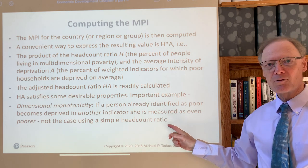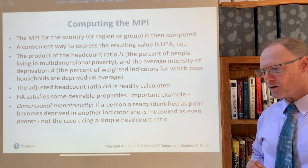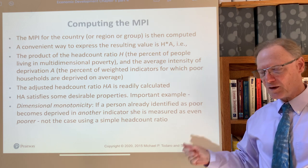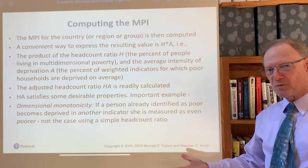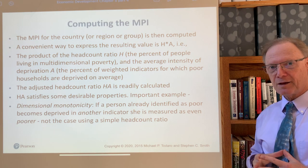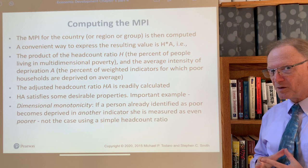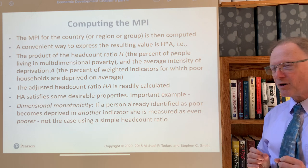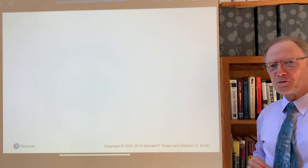Suppose the cutoff is 0.3, as it is within the multidimensional poverty index. If a person is deprived in 60% of indicators they are considered multidimensionally poor. But if you're just looking at the fraction who are multidimensionally poor and that person becomes deprived in 70% of indicators, that does not show up in the index. This is the same kind of problem we had to address with income poverty, but in a multidimensional framework.